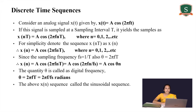Now we will see the way of representing discrete time sequences. For that you need to consider an analog signal — any analog signal. I have considered a cosine waveform, whose expression is x(t) = A cos(2πft).